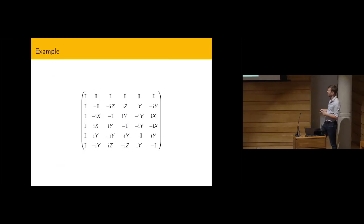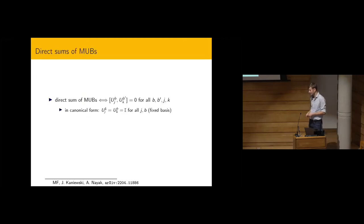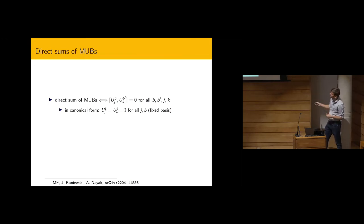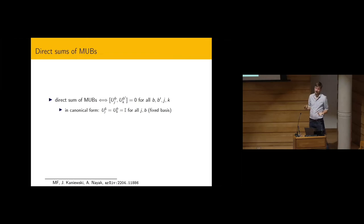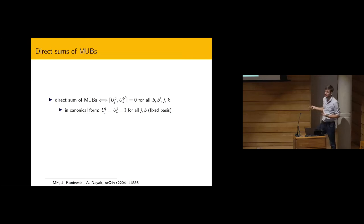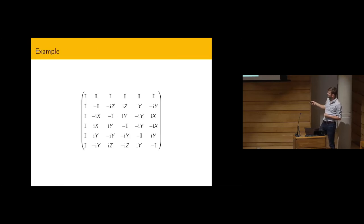There is a nice example for dimension greater than one: plugging in the Pauli matrices gives a Hadamard matrix of unitaries. Direct sums of MUBs correspond to MUMs where all unitaries in the Hadamard matrix commute — which is not the case in the Pauli example. This must hold in what we call the canonical form, where the first row and column are identities.